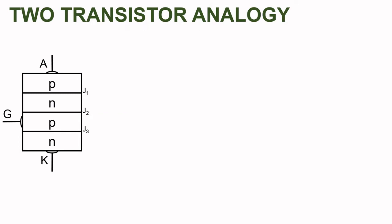We all know that the structure of SCR is a four-layered PN-PN type of structure, out of which the top layer is connected to the anode terminal, the bottom-most layer is connected to the cathode terminal, and the P-layer nearer to the cathode is connected to the gate terminal. There are three different junctions J1, J2, and J3 formed in the diffusion of the four layers.